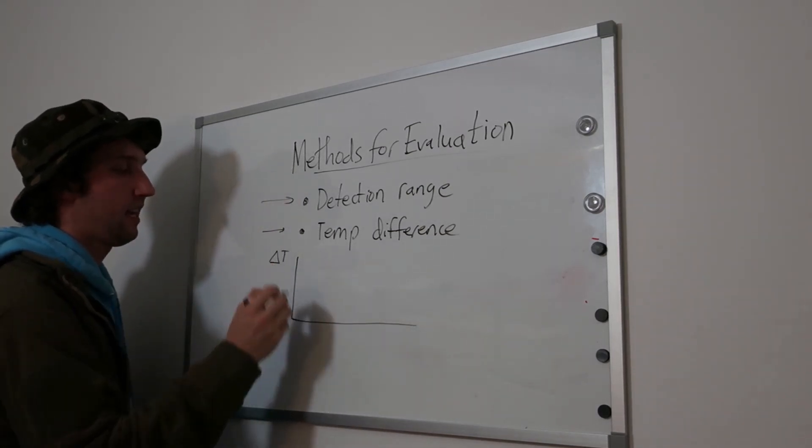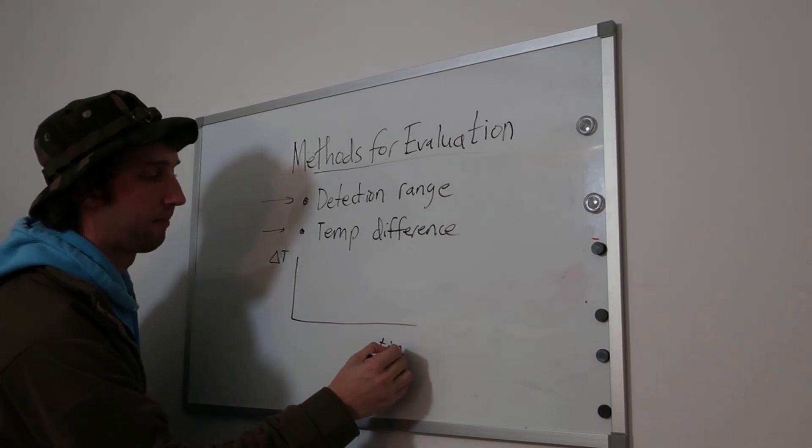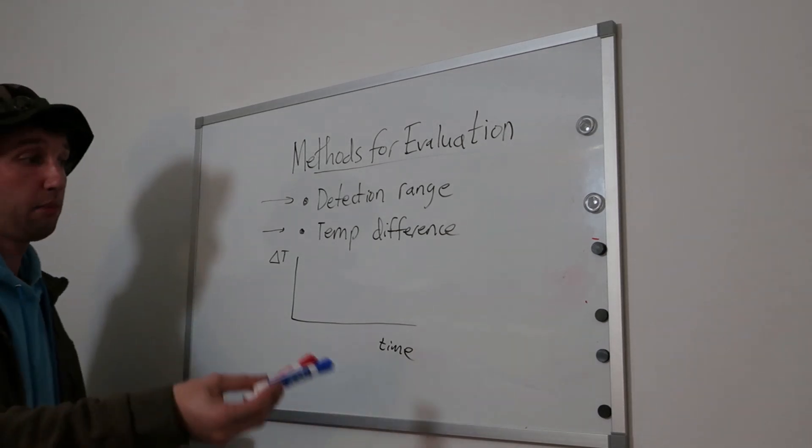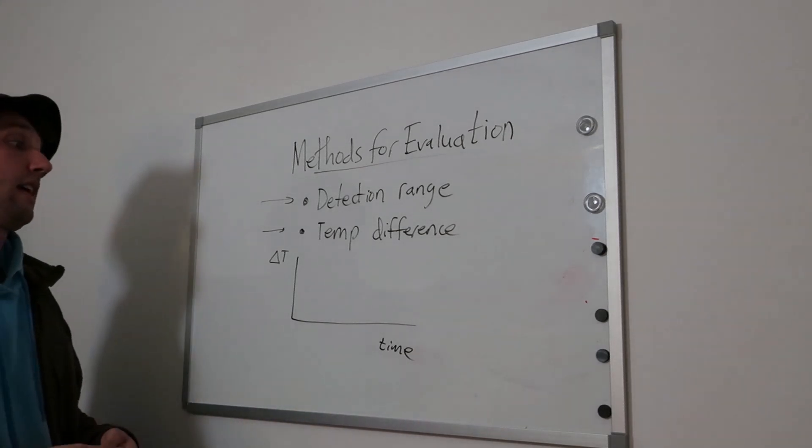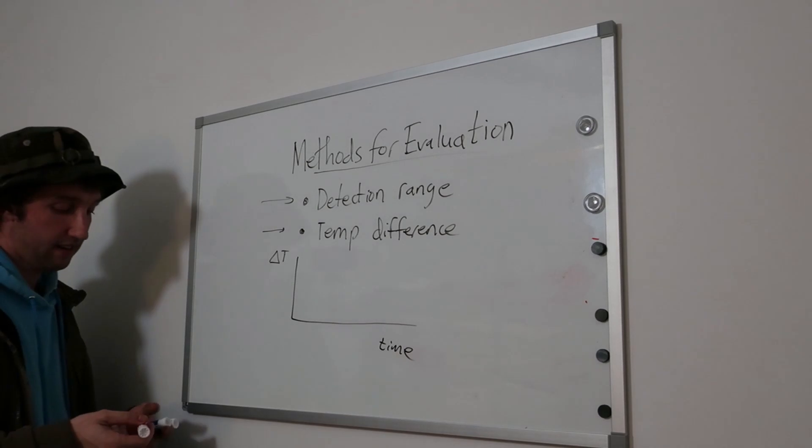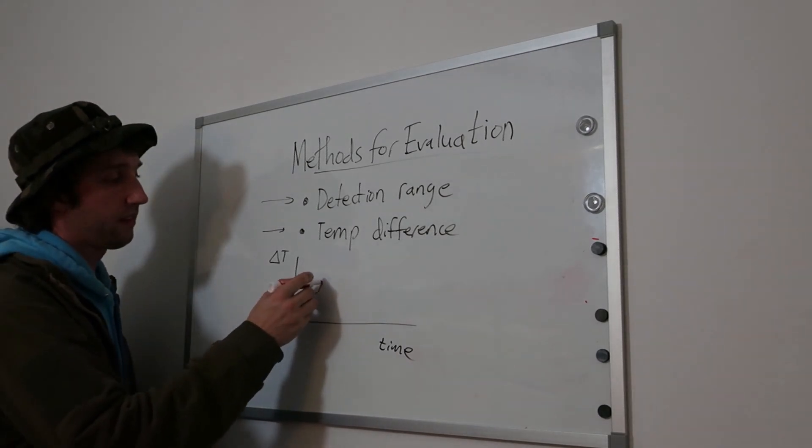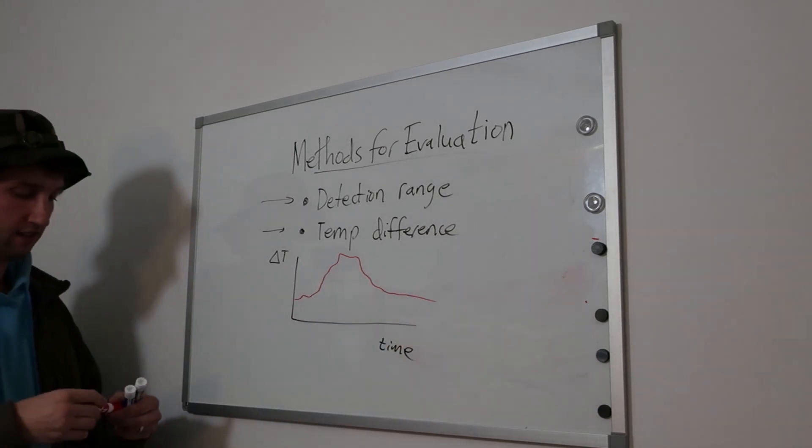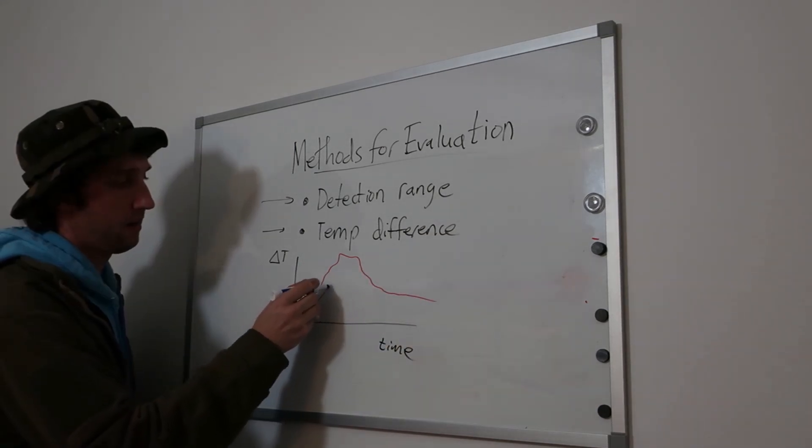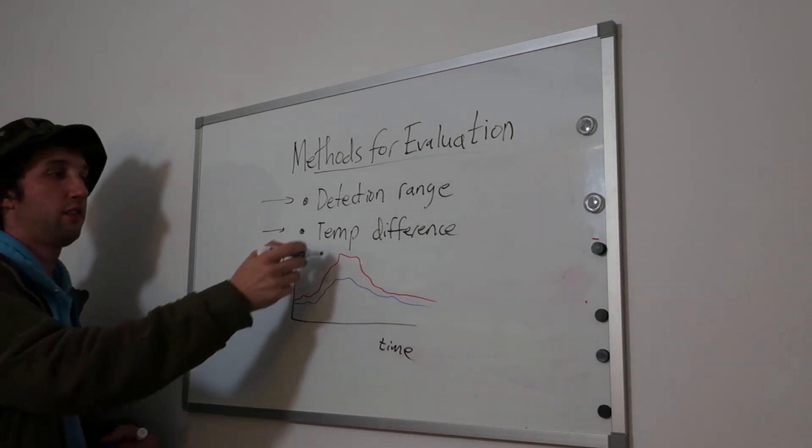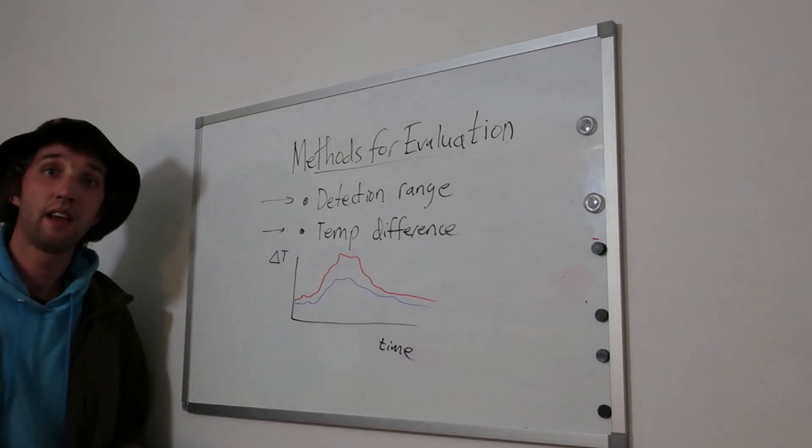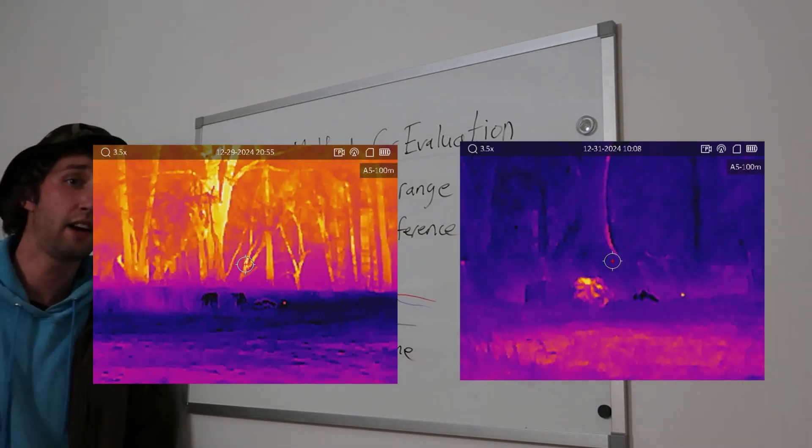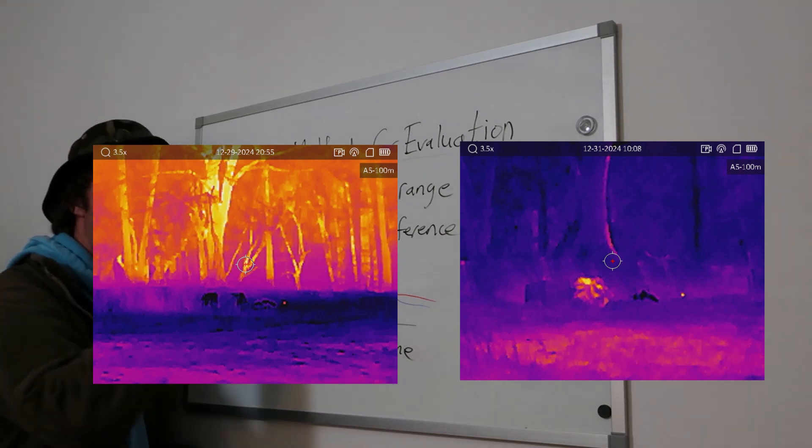So this could look like this. You've got your delta T, and this is time. And you would want to measure it at multiple times a day because it's going to have a different effect. For example, this could be the temperature of your target, and this might be the temperature of the surroundings. And maybe there's a greater difference at a certain time of day when things are warmer, when the sun is shining on stuff. So you'll want to consider that.